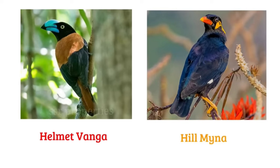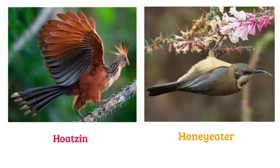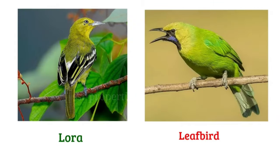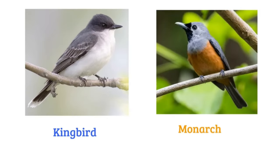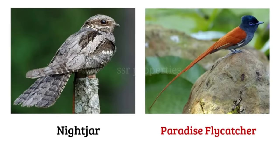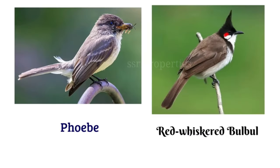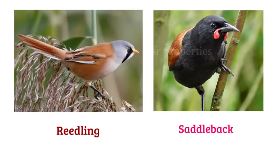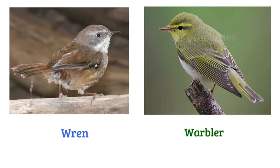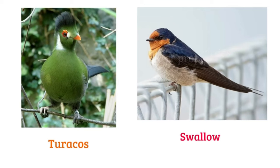Hill miner, wattlebird, honeyeater, lora, leafbird, kingbird, monarch, nightjar, paradise flycatcher, phoebe, red-whiskered bulbul, reedling, saddleback, wren, oriole, turaco, swallow, coleto.